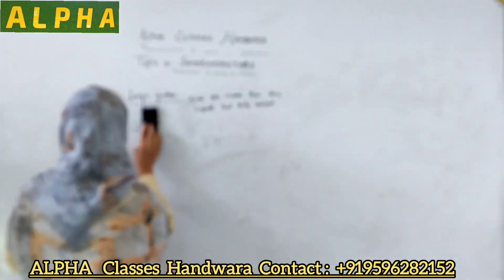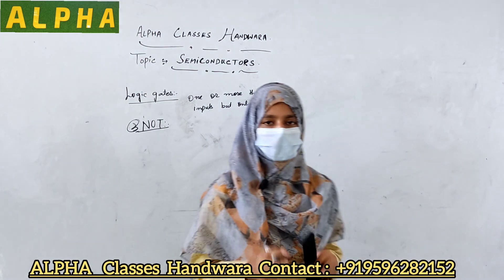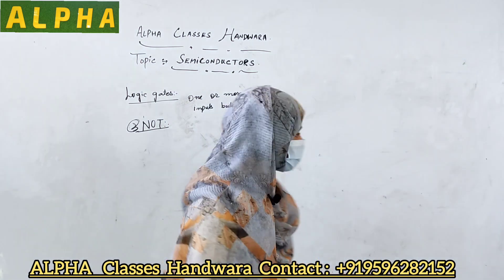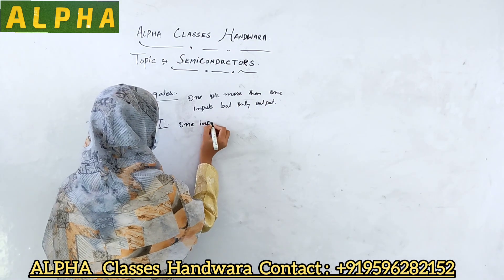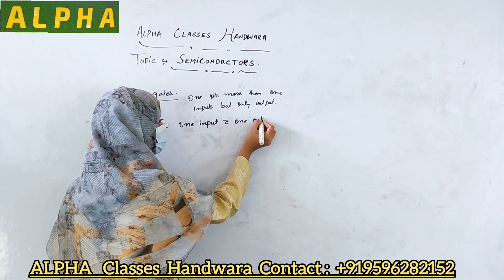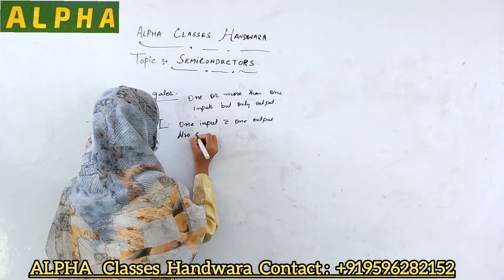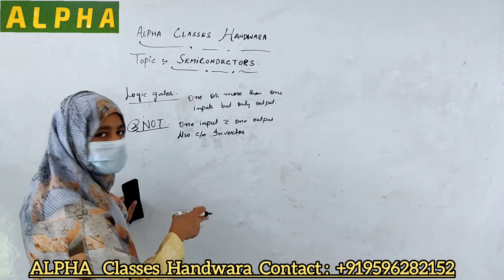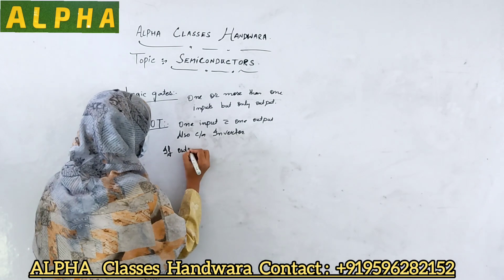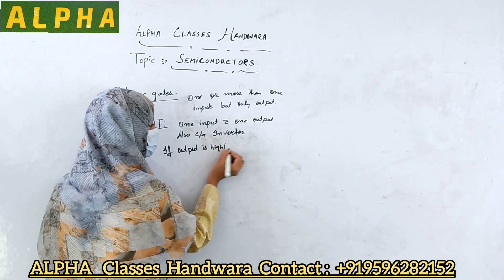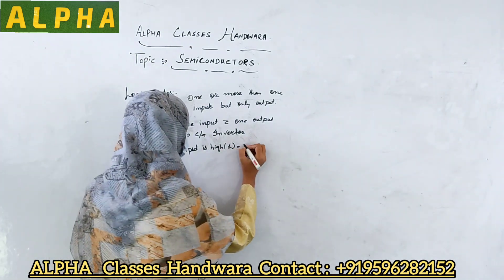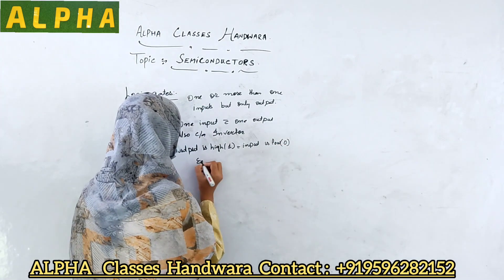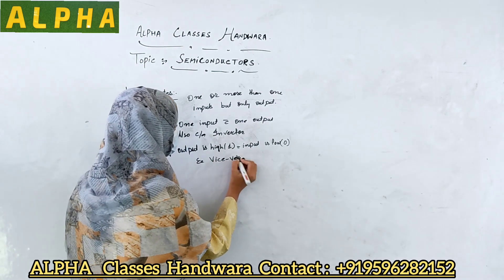Let us move towards the third logic gate, that is the NOT gate. The NOT gate is a logic gate having one input with only one output. It is also called an inverter, because it inverts the input. If the output is high, that is 1, the input will be 0, that is low, and vice versa. In this manner, it inverts the input.